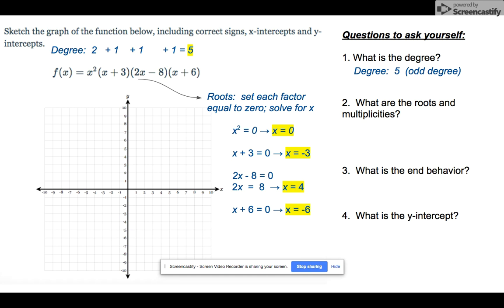So now the multiplicities, everything is always multiplicity 1. It will be a single root unless there's an exponent. So I know that x equals 0 is a double root. It has multiplicity 2. But everything else is a single root.